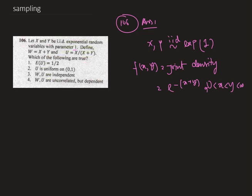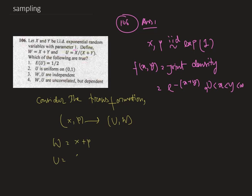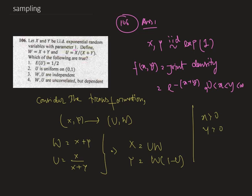Now consider the transformation from x, y to u, w, where w is x plus y and u is x by x plus y. So from this we can say that x is u times w and y is w into 1 minus u. Now as x is positive and y is positive, we can say that w is positive and u is a fraction.